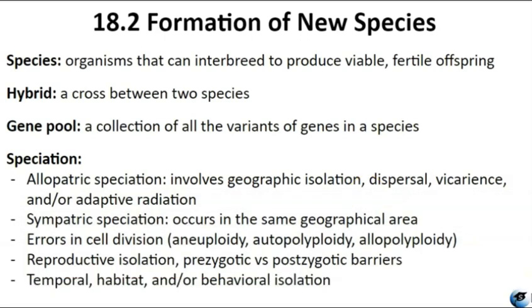Populations of species share a gene pool, which encompasses all the gene variants within the species. Genetic variations within a species can only be passed on to the next generation through two primary pathways: asexual reproduction or sexual reproduction. In asexual reproduction, if the reproducing cell possesses the altered trait, the change is transmitted to the next generation. However, for the changed trait to pass on through sexual reproduction, a gamete must possess the altered trait. Sexually reproducing organisms can undergo genetic changes in their body cells, but if these changes do not occur in a gamete, the altered trait will not be inherited by the next generation. Only heritable traits have the potential to evolve.